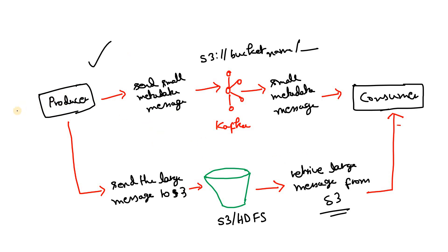So whatever volume our message is, we only send the URL. On the consumer side, the consumer will consume that small metadata message and once it gets the URL it can go to S3 and from that URL — where the producer kept the actual large data — the consumer fetches the large message. This way, in our Kafka system we are not giving the burden of storing the large message. Kafka stores only lightweight metadata information. The actual heavy bulk data is stored in S3 or HDFS. I hope the architecture is clear — now let's jump into the implementation section.